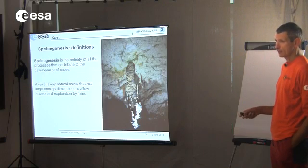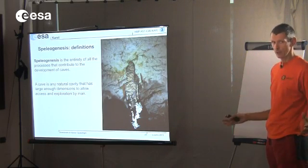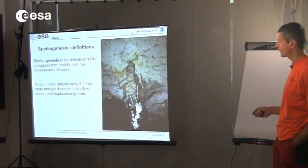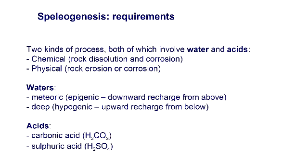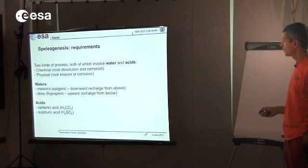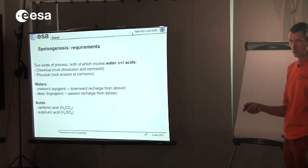Speleogenesis is the genesis of caves — all the processes involved in the formation of the big voids in which we can walk. A cave normally is something we can walk in, so even the petroleum geologist is not interested in man-sized cavities; they're interested in small fractures that are enlarged by dissolution. There are two kinds of processes, both involving water and some involving acids. There's a chemical process and a physical one. The chemical process is dissolution — the rock is dissolved and voids grow. The physical one is erosion — water that takes away fragments of rock. Both are active: the chemical one especially at the beginning, the physical one afterwards.